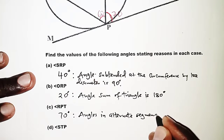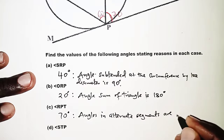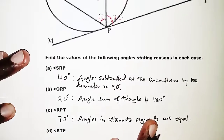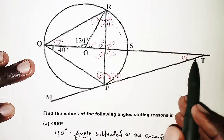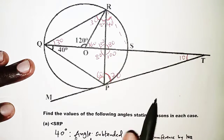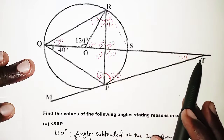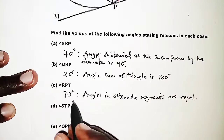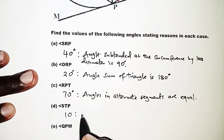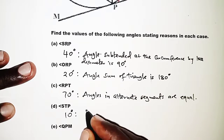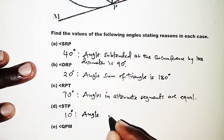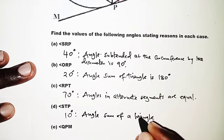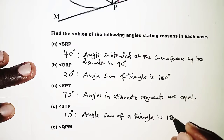For part D, angle STP: STP is 10°. We found this by looking at the angle sum of a triangle, which is 180°.